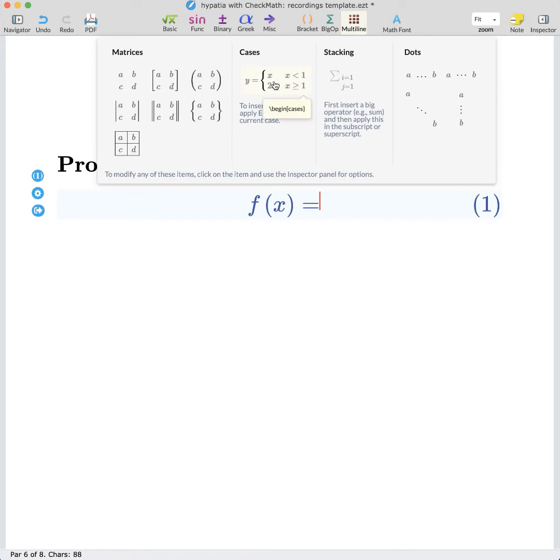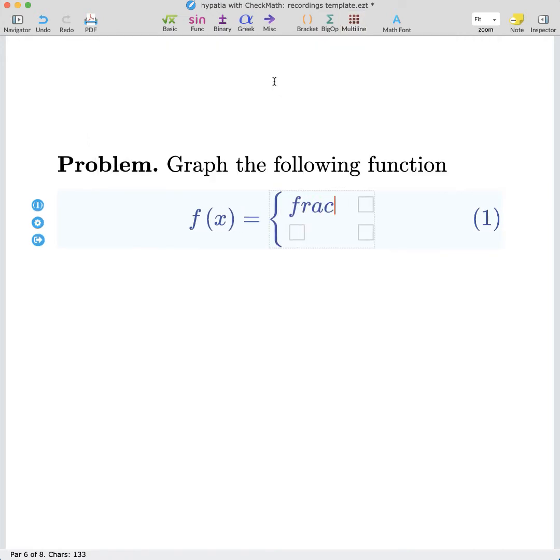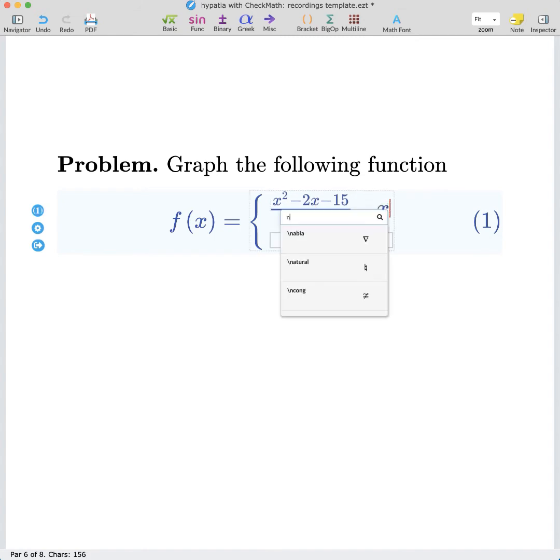From the multiline menu we can choose cases, and the first case f will be a fraction with x squared minus 2x minus 15 in the numerator, and x plus 3 in the denominator. This will be valid for x not equal to negative 3, so we choose not equal to negative 3.